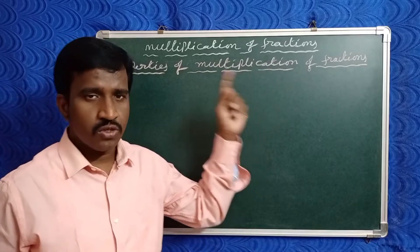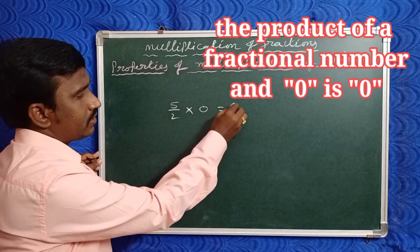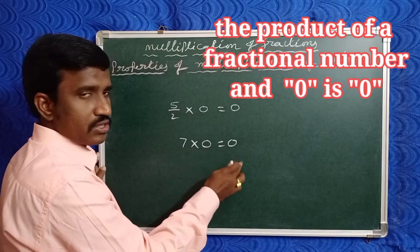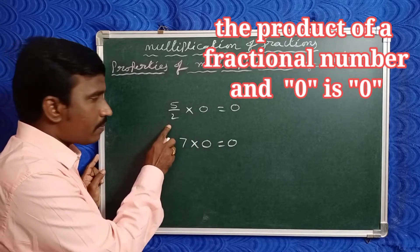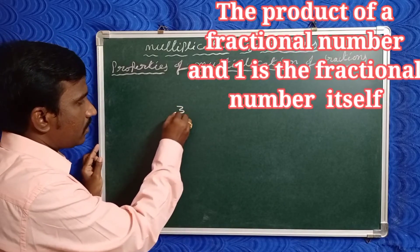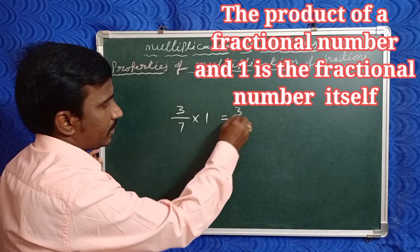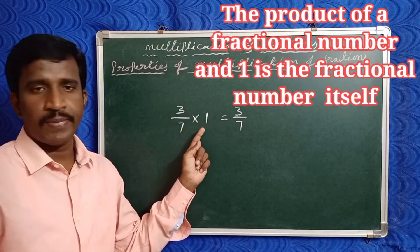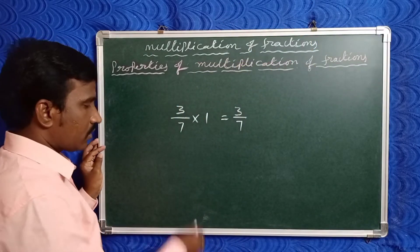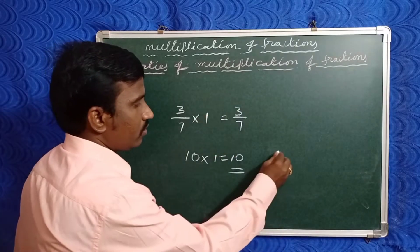Now check the properties of multiplication of fractions. First property: any fraction number multiplied by zero is zero. Just as seven zeros are zero, the product of any fraction and zero is zero. Second property: the product of any fractional number with one will be the fraction number itself. For example, three by seven into one equals three by seven. All numbers: ten into one equals ten; similarly three by seven into one means three by seven.